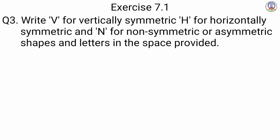Question number 3: Write V for vertically symmetric, H for horizontally symmetric, and N for non-symmetric or asymmetric shapes and letters in the space provided. अगर alphabet या shape vertically symmetric हो तो उसके सामने V लिखना है, horizontally symmetric हो तो H लिखना है, और non-symmetric या asymmetric shape हो तो N लिखना है.